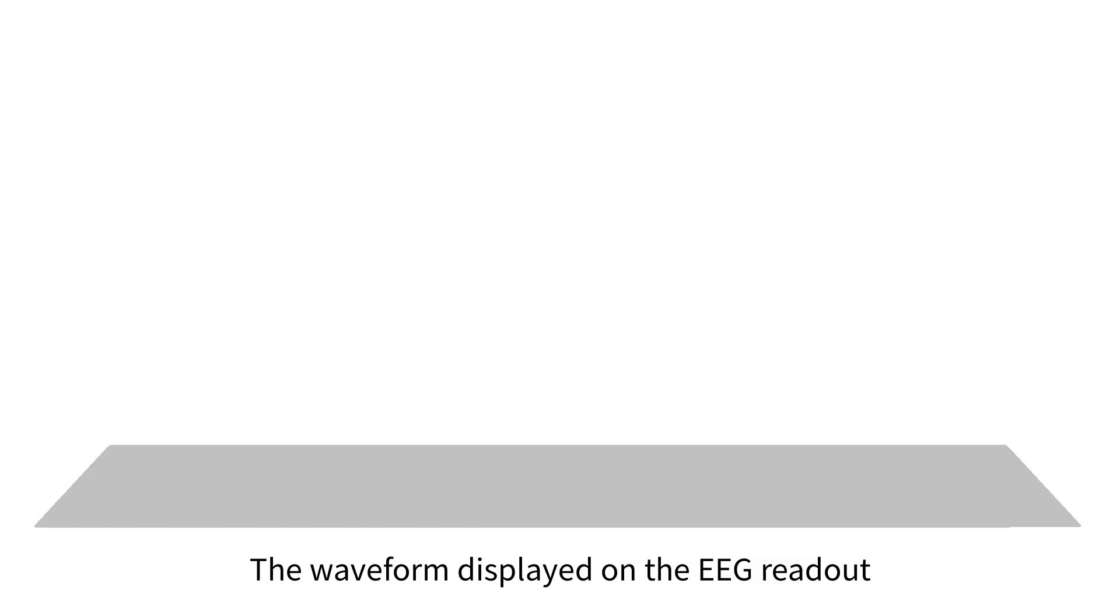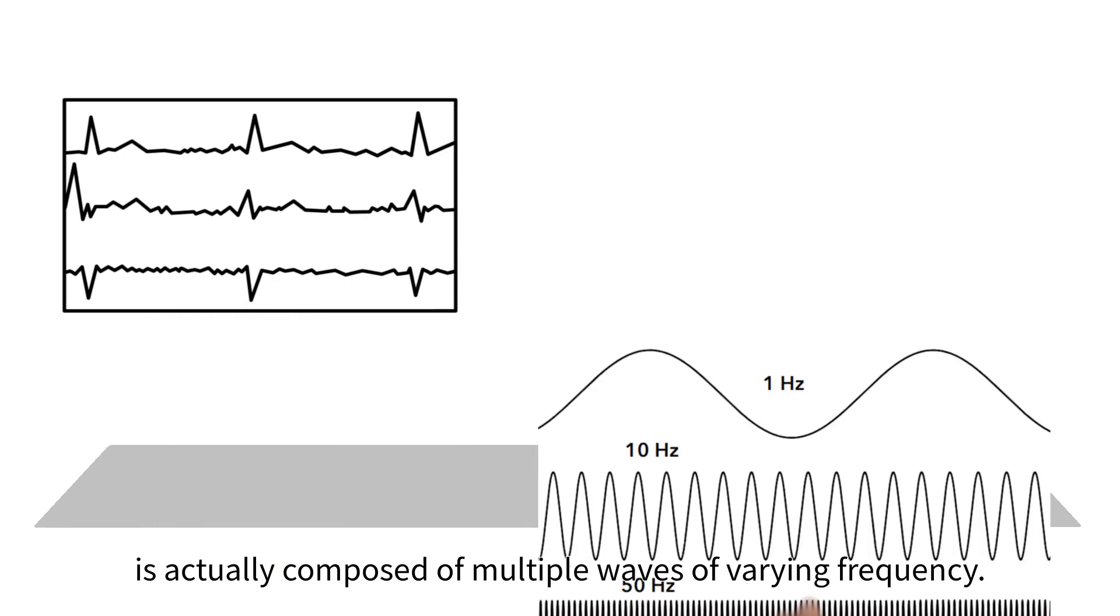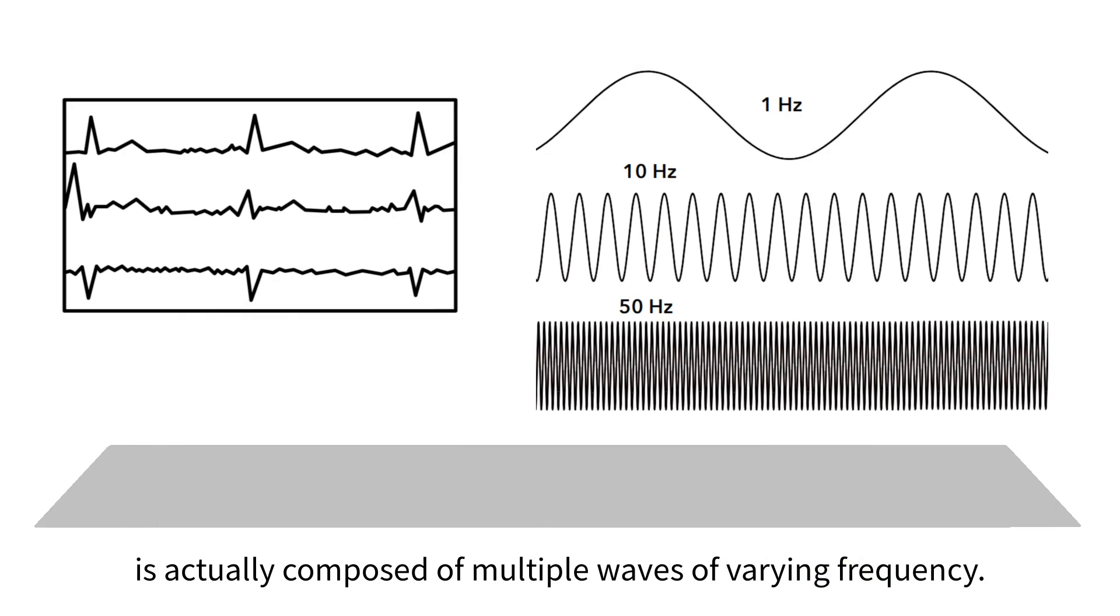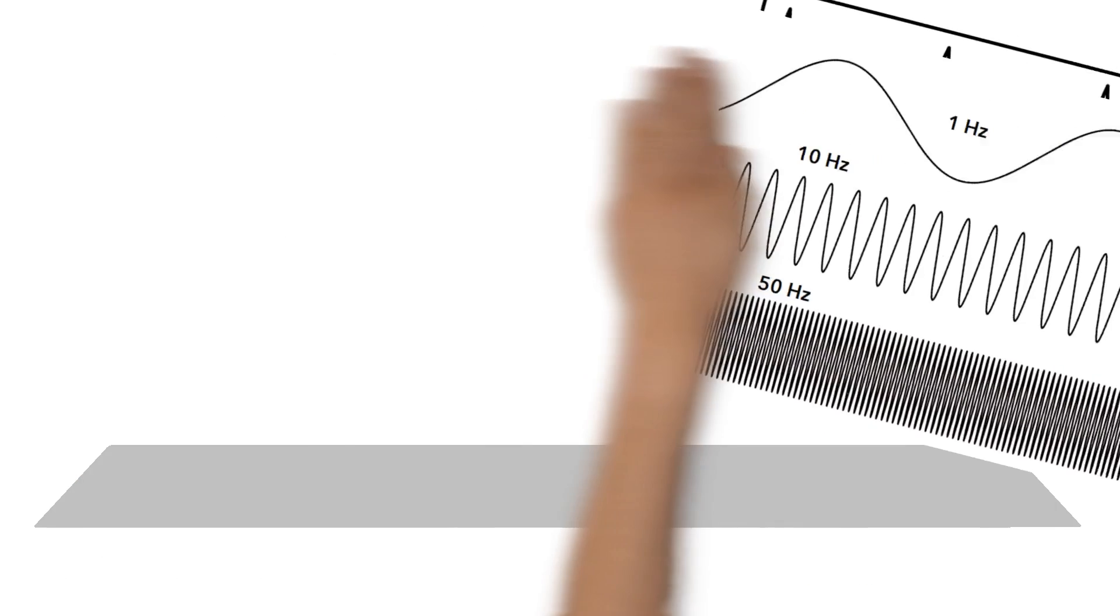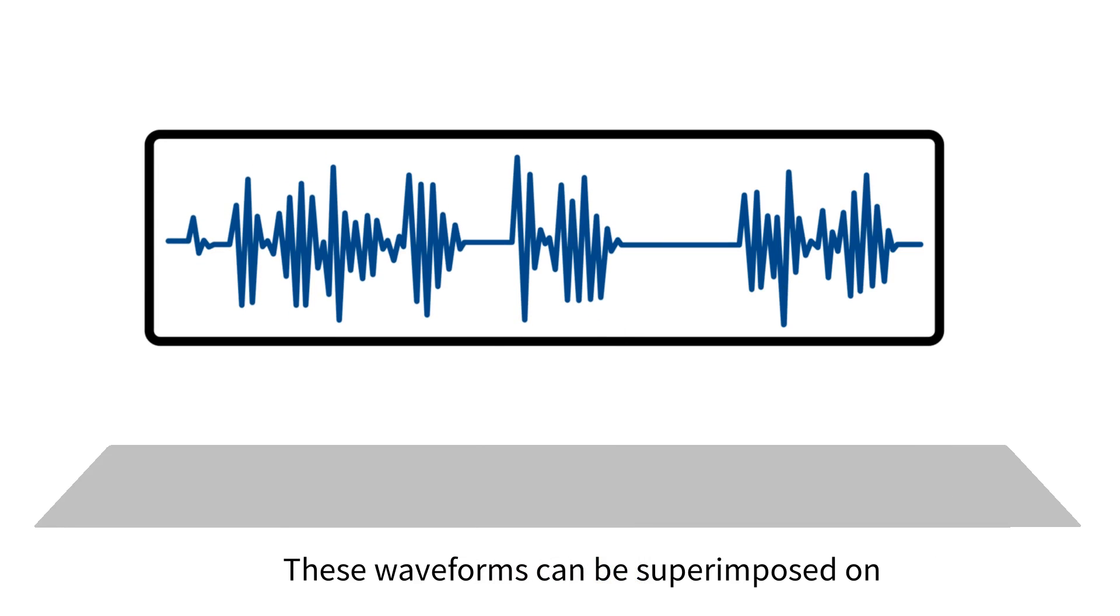The waveform displayed on the EEG readout is actually composed of multiple waves of varying frequency. These waveforms can be superimposed on each other to become a single waveform.